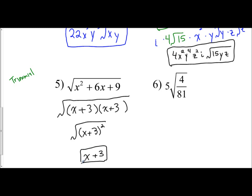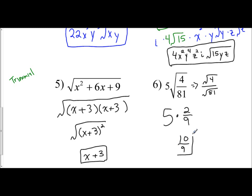The key idea: you can't break apart radicals across plus signs or minus signs, only across multiplication or division. For the last problem, I still have a 5 on the outside, but I can break apart to the square root of 4 over the square root of 81, because that's division. The square root of 4 is 2, the square root of 81 is 9. So 5 times 2 is 10, giving you 10 ninths. We can break radicals apart across fractions or multiplication, but not across plus or minus signs. For trinomials, remember to factor them first. Thank you.